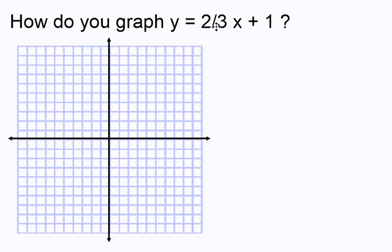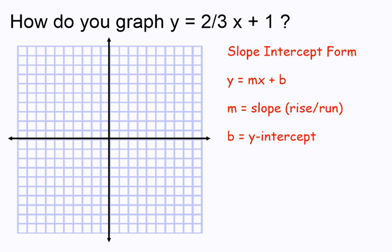So we're going to graph this linear equation, y equals 2/3x plus 1. We'll note that this is in slope-intercept form, or y equals mx plus b.